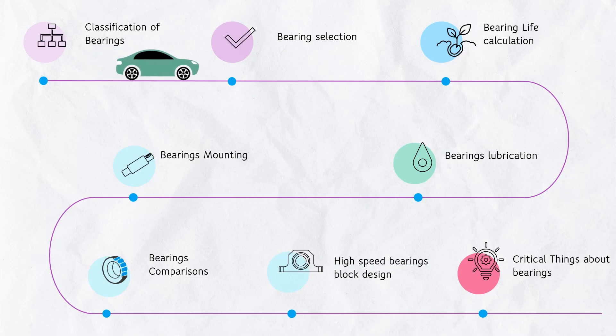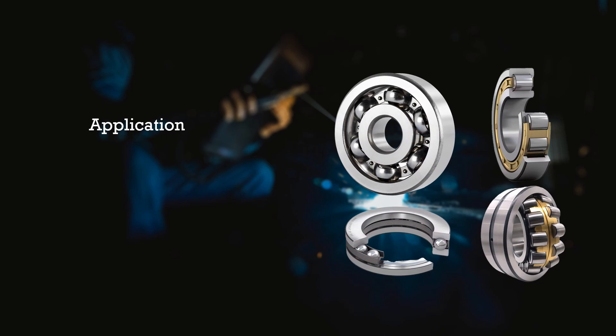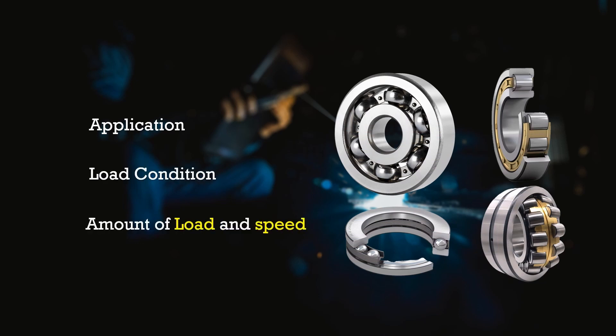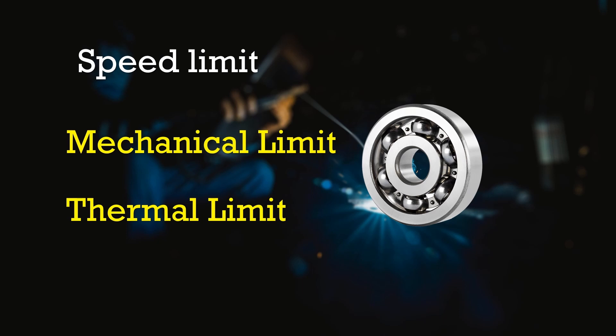Our main focus is to master the selection of bearing — how to choose the right type of bearing as per the application, as per the loading condition, and as per the amount of load and speed. Each bearing has its own speed limitation: mechanical speed limitations as well as thermal speed limitation. But the selection of bearing is not only about selecting the right type of bearing — it is also about ensuring the selected bearing meets its expected service life.